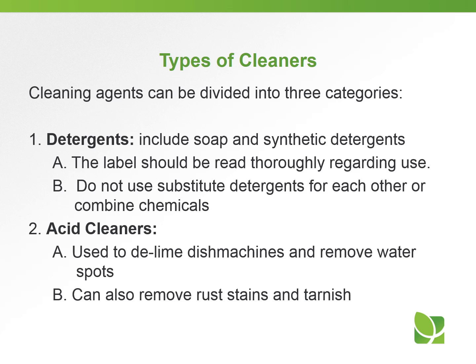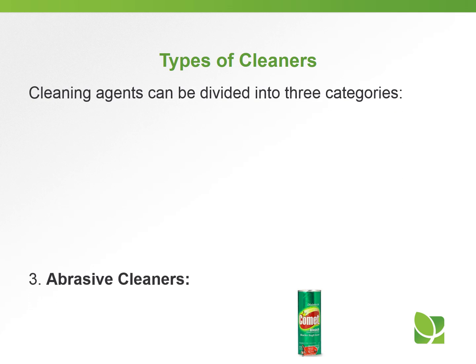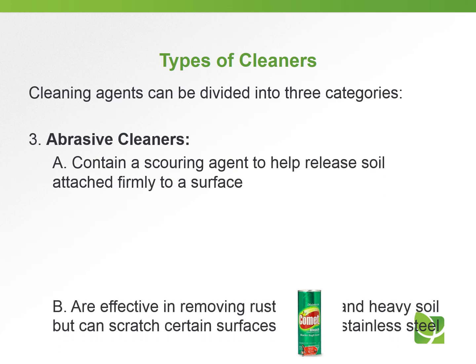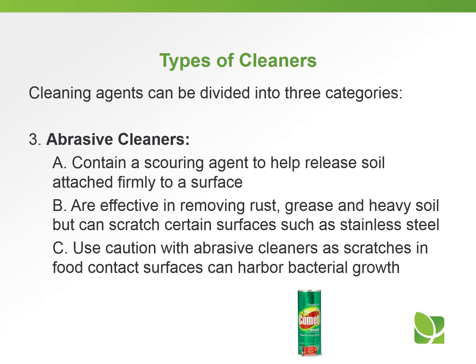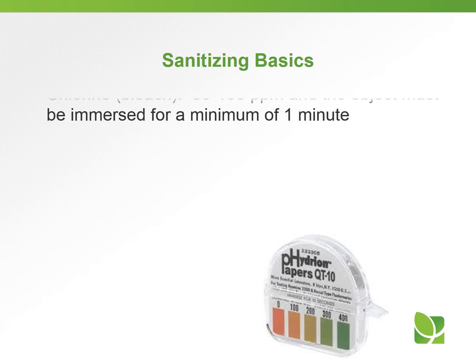The second category is acid cleaners, which are used to de-lime dish machines, remove water spots, rust stains, and tarnish. The third category is abrasive cleaners — Comet is a familiar example. Abrasive cleaners contain a scarring agent or grit that helps release soil attached to a surface. They're effective at removing rust, grease, and heavy soil, but they can scratch stainless steel. Use caution because scratching food contact surfaces can harbor bacterial growth.